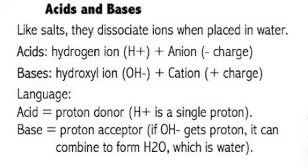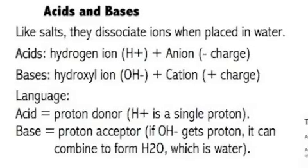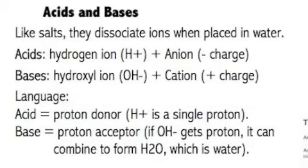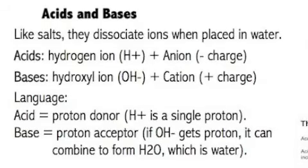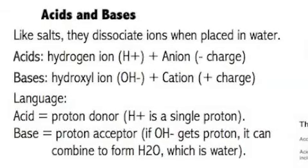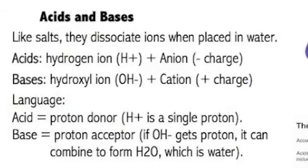So an acid then is a hydrogen ion plus a large, negatively charged molecule - that's an anion. And a base is a hydroxyl ion and a cation, and the cation is a positively charged molecule.